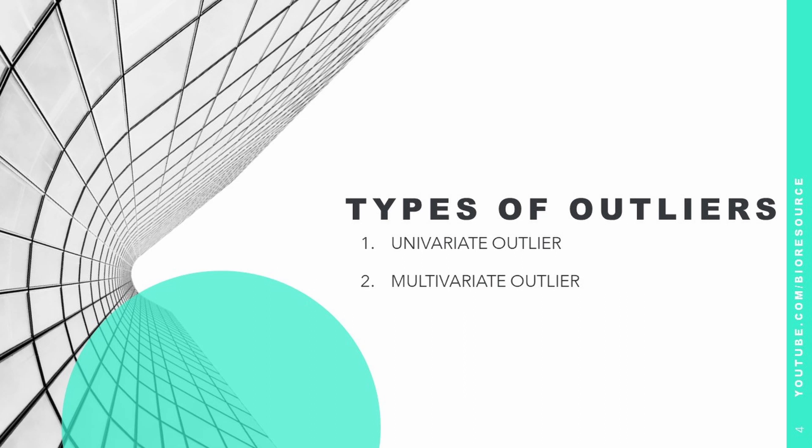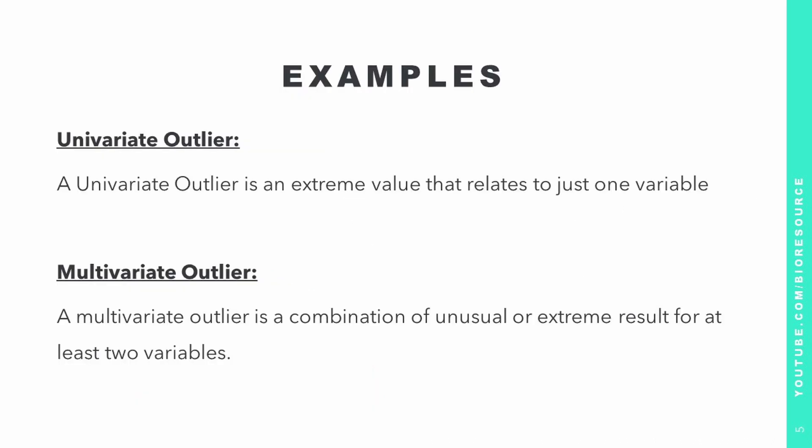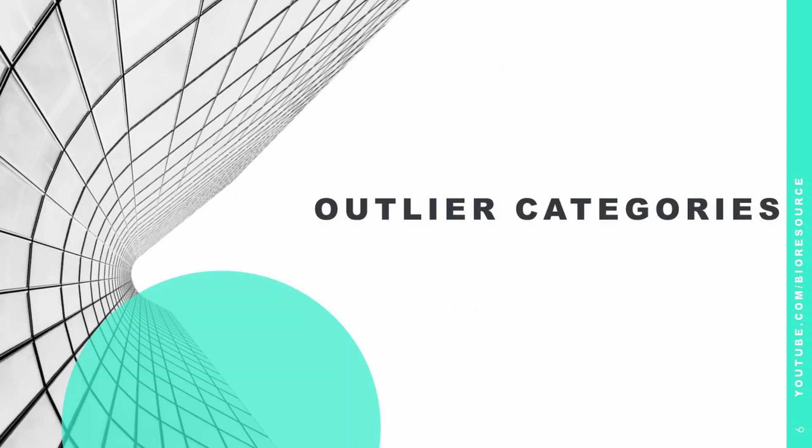Outliers are of two types: univariate outliers and multivariate outliers. A univariate outlier is an extreme value that relates to just one variable, whereas a multivariate outlier is a combination of unusual or extreme results for at least two variables.